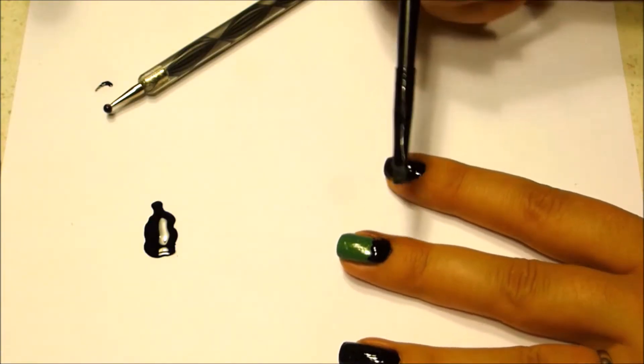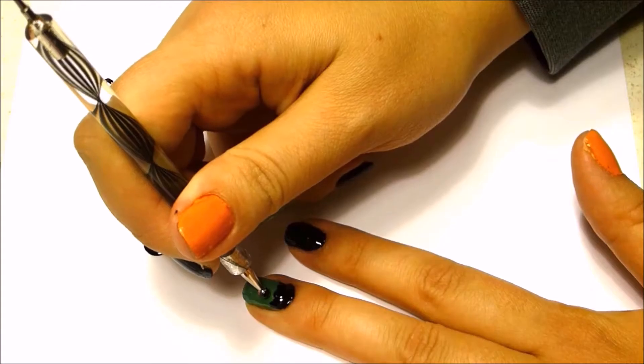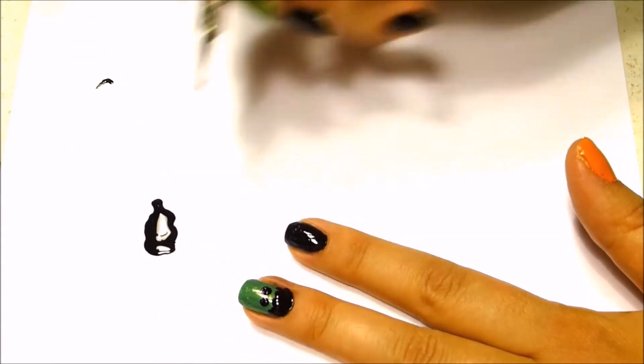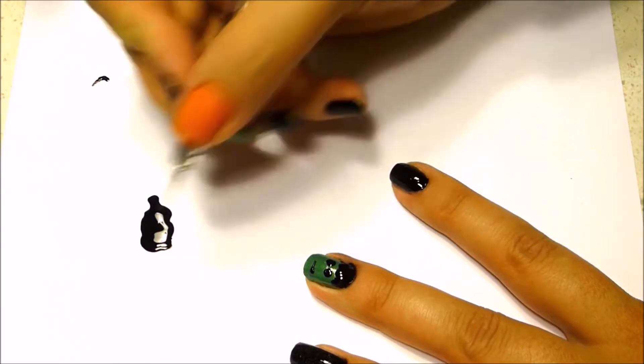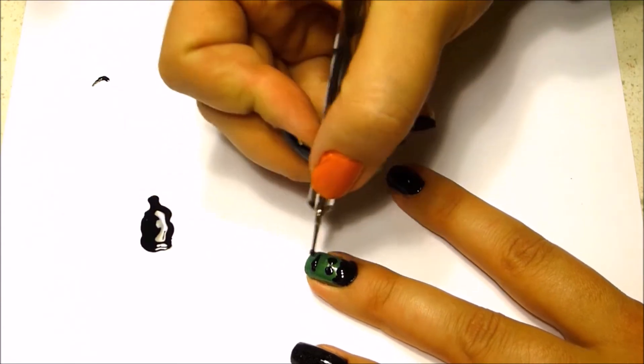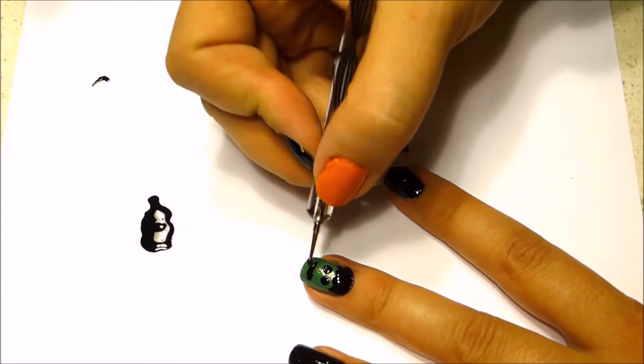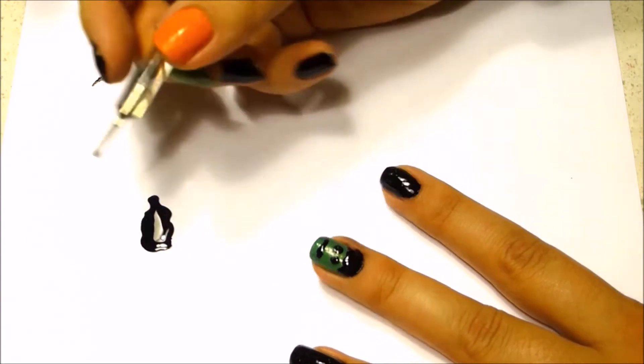You're going to add black eyeballs and you're running a line across the bottom. Then you're going to put some stitches through his mouth because his mouth was sewn onto his face.